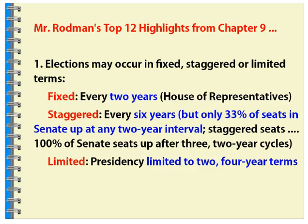A staggered election is what takes place in the Senate. This is every six years — 33% of the seats are up every two years. Over the course of those six years, 33% every two years, all 100% of the seats will ultimately be up for re-election or election after three two-year cycles. So you'll only be replacing at any one time 33% of the Senate if you vote them all out.